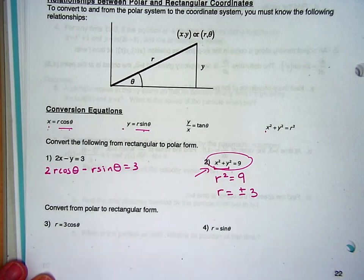Notice this is an equation of a circle. r equals plus or minus 3 is also an equation of a circle, just in polar form.